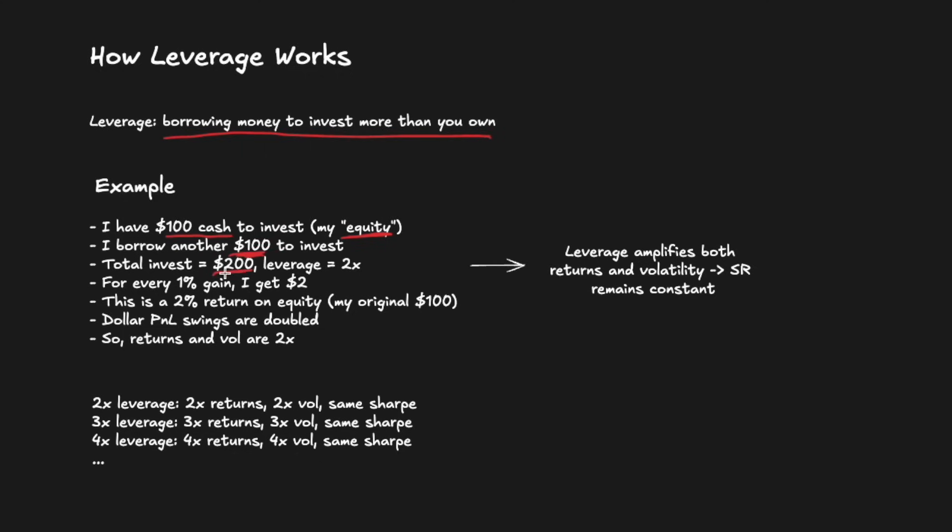If you then borrow another $100 to invest, the total amount you invested is $200, and your leverage is 2x. For every 1% gain in the original investment (the stock that you invested in, or crypto, or whatever), you're actually going to earn $2, not $1. You get a dollar on the cash that you invested (your equity) and then you get another dollar on the hundred dollars you borrowed (your leverage). So you get a 2% return on your actual equity, the original $100 that you invested.